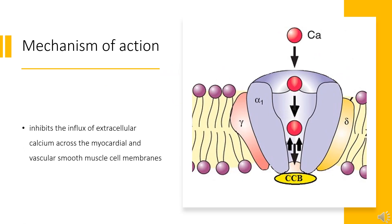Mechanism of Action: By deforming the channel, inhibiting ion-control gating mechanisms, and/or interfering with the release of calcium from the sarcoplasmic reticulum, Lercanidipine inhibits the influx of extracellular calcium across the myocardial and vascular smooth muscle cell membranes. The decrease in intracellular calcium inhibits the contractile processes of the myocardial smooth muscle cells, causing dilation of the coronary and systemic arteries, increased oxygen delivery to the myocardial tissue, decreased total peripheral resistance, decreased systemic blood pressure, and decreased afterload.